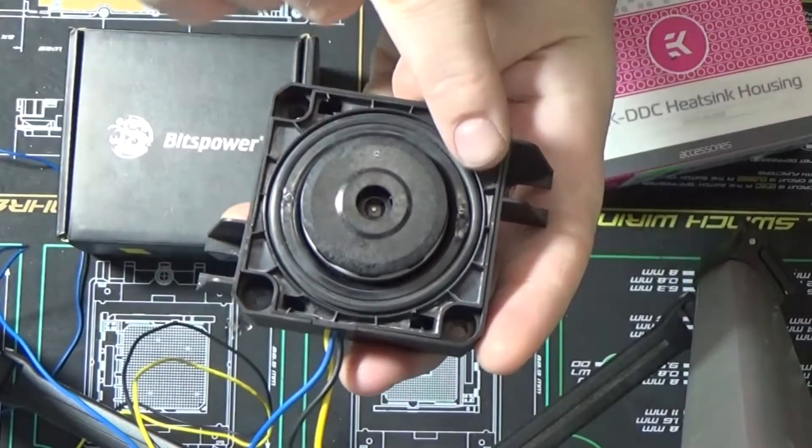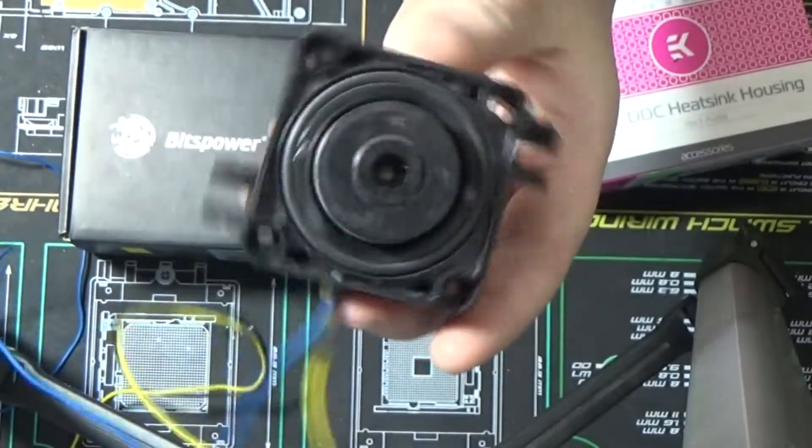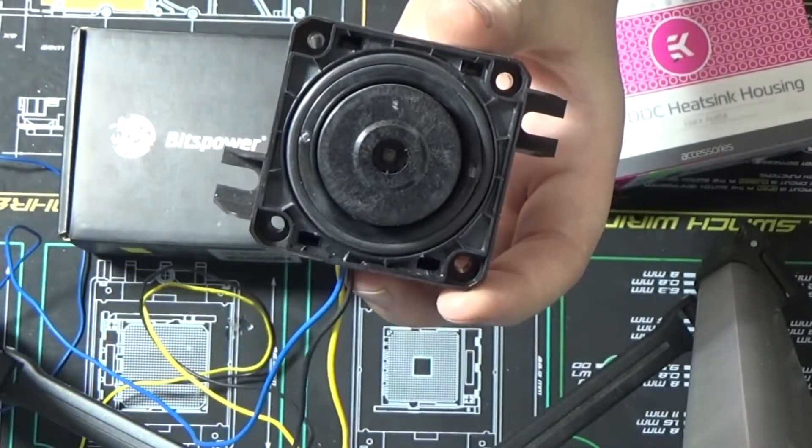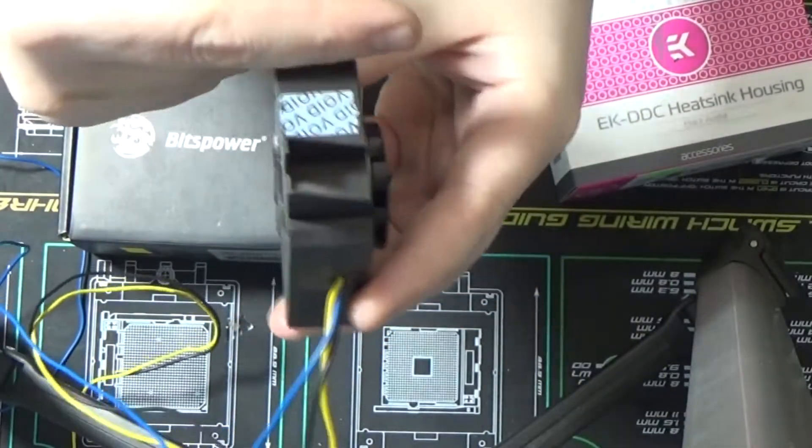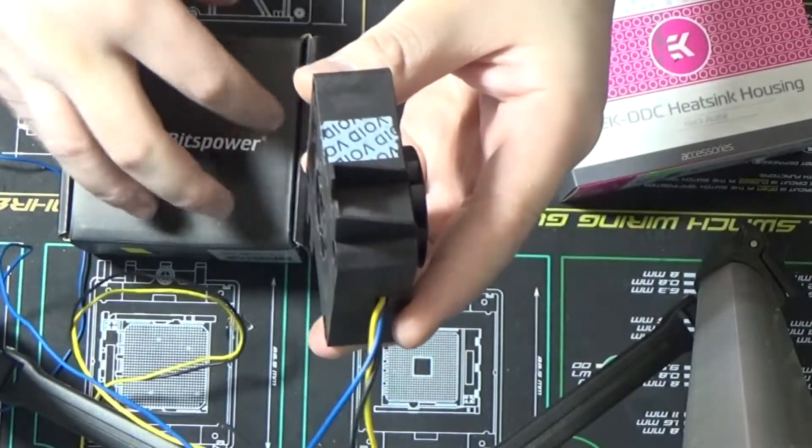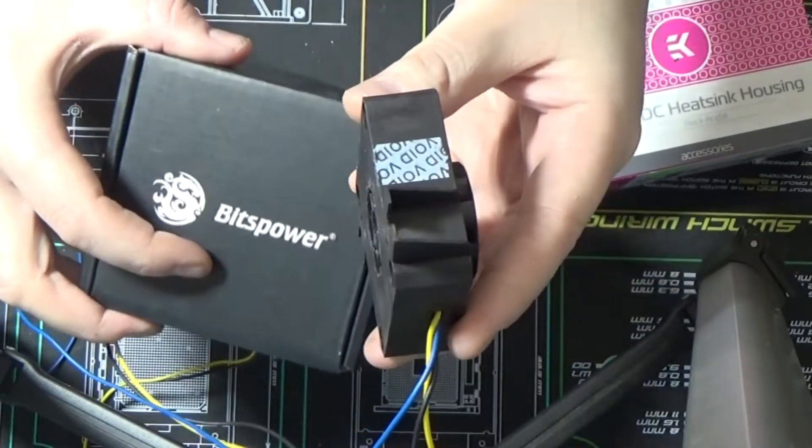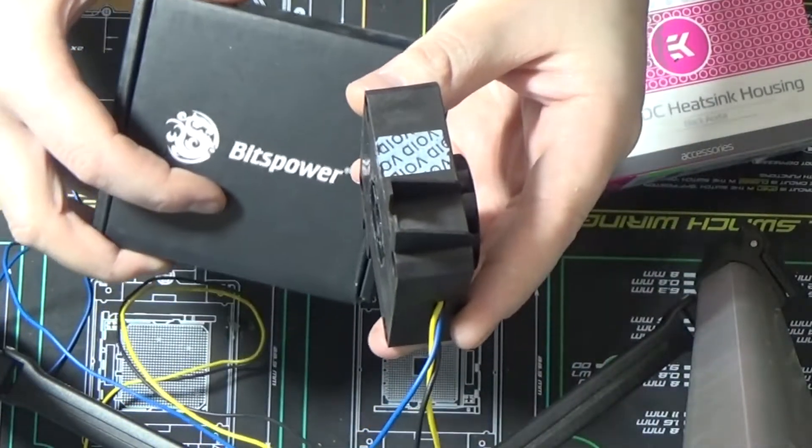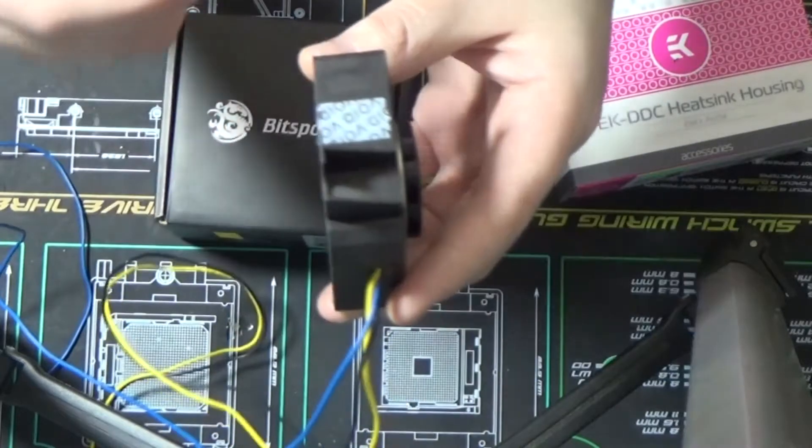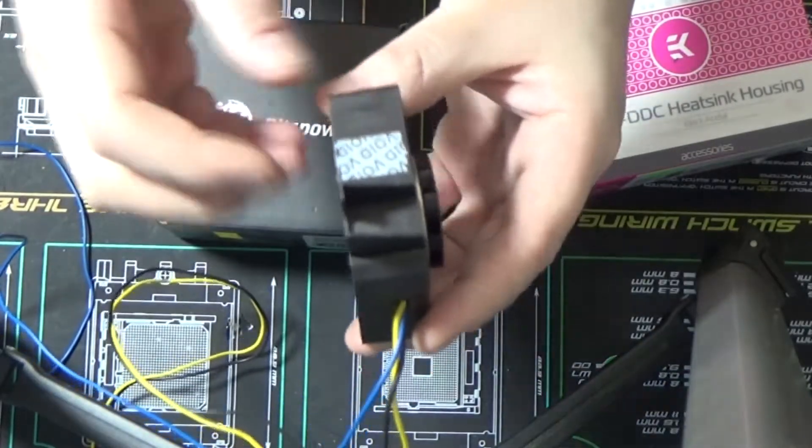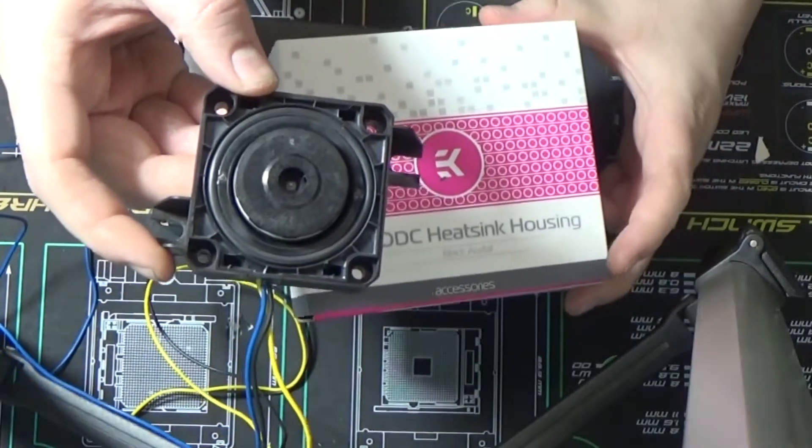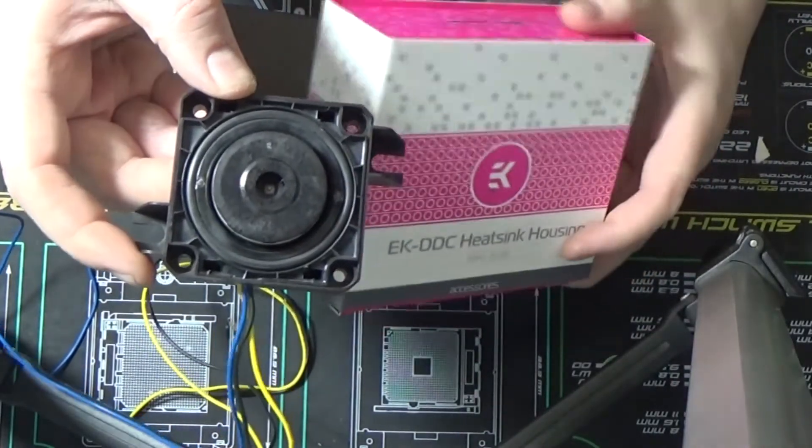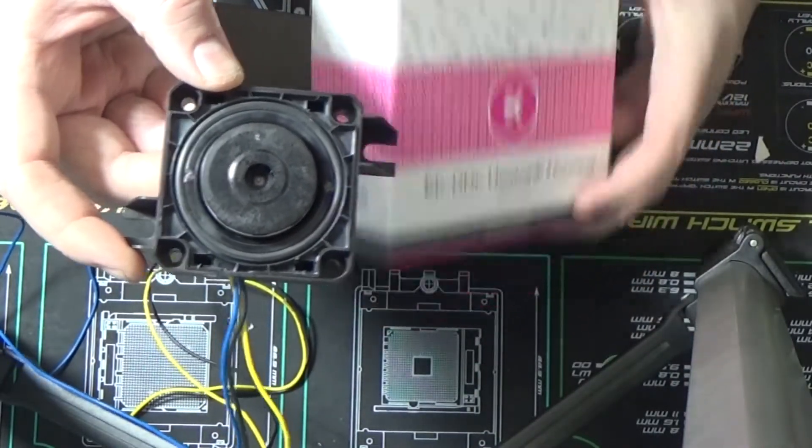The only problems you might encounter are how long your screws are for that given heat sink. For example, the Bits Power is absolutely meant to be used with a Bits Power pump top, so those screws might be a little too long or not long enough. Stuff like the EK is a little more universal. I've never had a problem with an EK heat sink fitting.